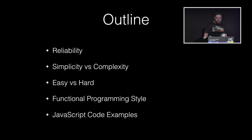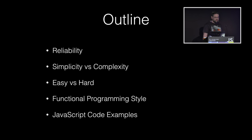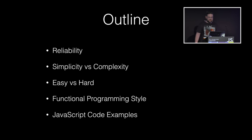In this talk, we'll look at what reliability, simplicity, and easiness means, how these things are related to solving the problems of limits on mental capacity, then go through some code examples in JavaScript to help mitigate these problems in practice.